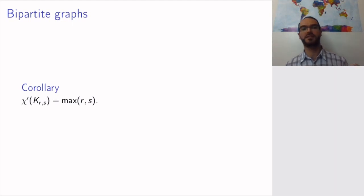As a consequence of this, we get that the complete bipartite graph on r white and s black vertices—well, the degree of the white vertices is s, the degree of the black vertices is r, so the maximum of these two numbers will be the chromatic index of the complete bipartite graph.